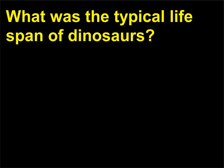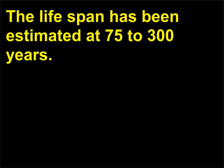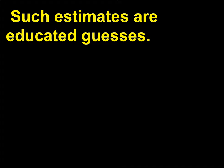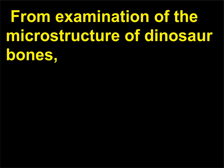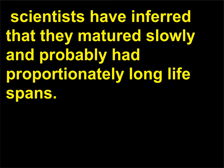What was the typical life span of dinosaurs? The life span has been estimated at 75 to 300 years. Such estimates are educated guesses from examination of the microstructure of dinosaur bones. Scientists have inferred that dinosaurs matured slowly and probably had proportionately long life spans.